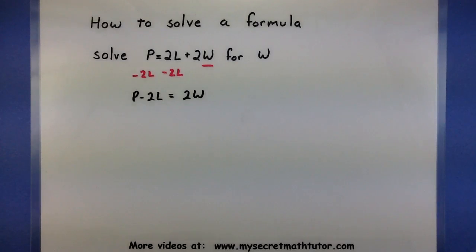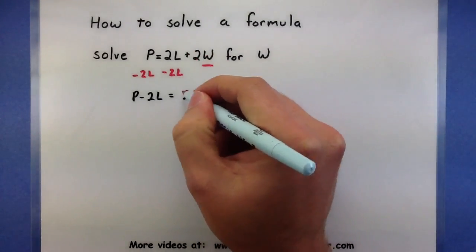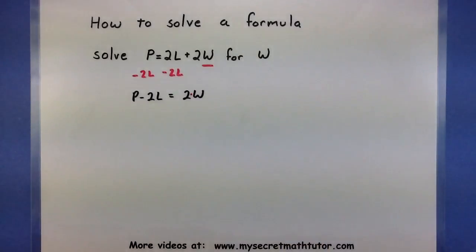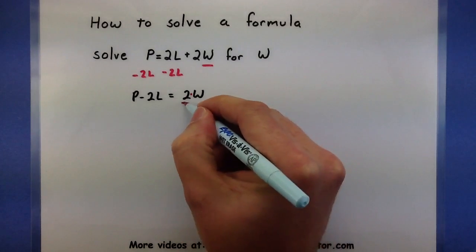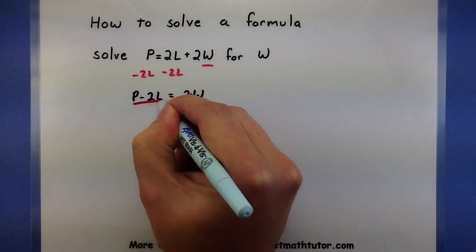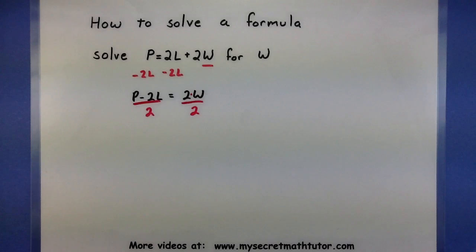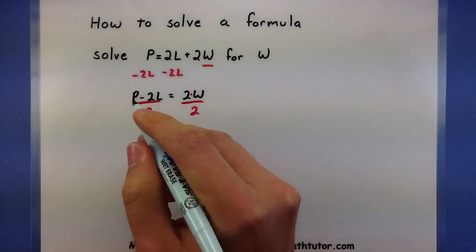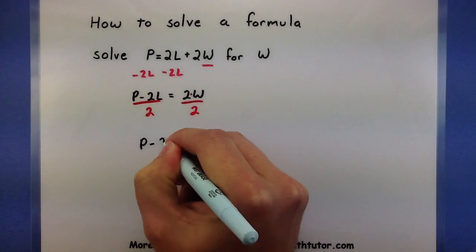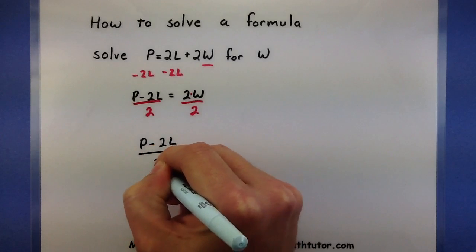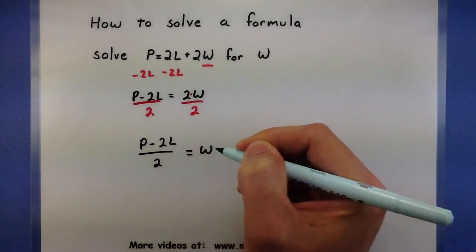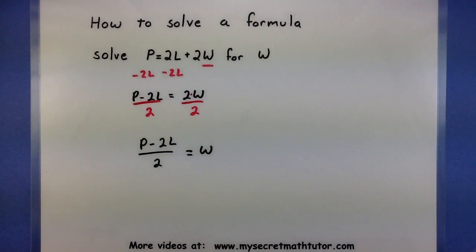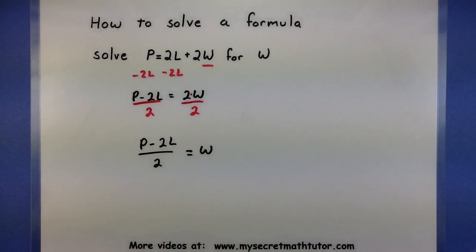This one is almost done. The last thing I want to do is get rid of this 2. Since the 2 is being multiplied by the w, I'll divide both sides by 2. So what I end up with is that w is equal to p minus 2l all divided by 2. I know that this one is done because w has been completely isolated.